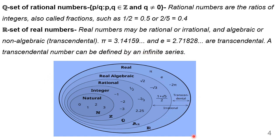Looking at the diagram: first we defined natural numbers, which had only positive integers. Then we went ahead with integers. Integers consist of all the elements of natural numbers as well as negative numbers. That means non-positive numbers are also included in integers.